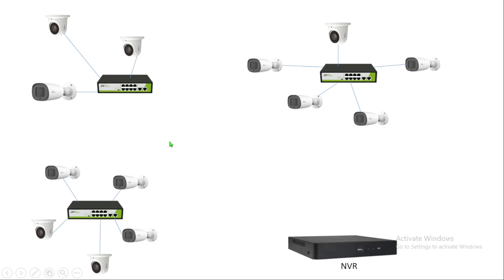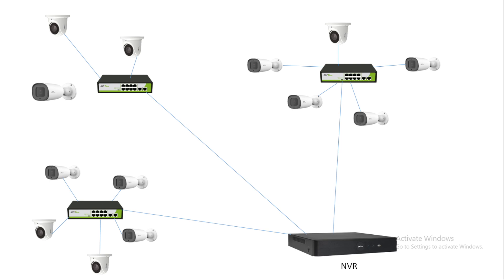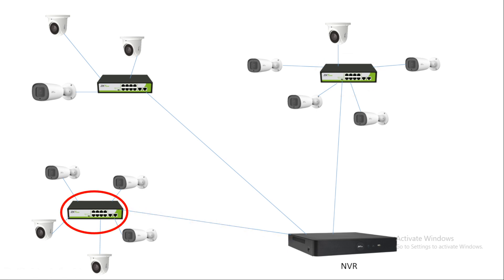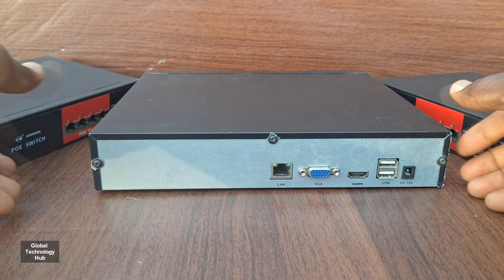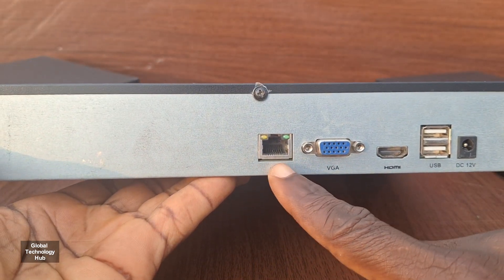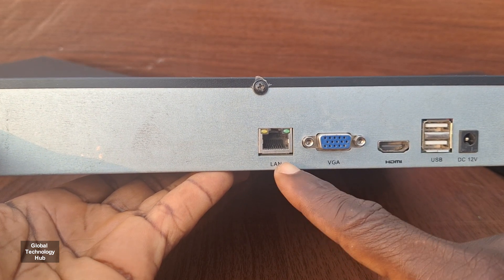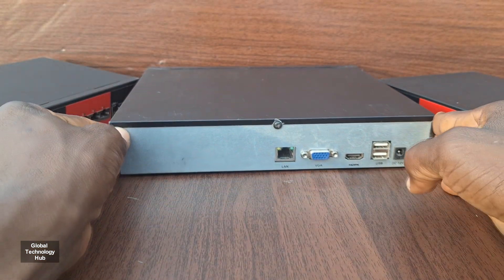With this setup, you then run cables from each of the network switches to the NVR. The first group will have a cable connection from the network switch coming to the NVR, then the second group's network switch also comes to the NVR, and the third group as well — so each network switch will go to the NVR. The question now remains: how can the connection between the network switches and the NVR be done, because the NVR has just one LAN port through which we can have the connections from the various network switches.